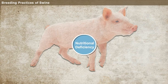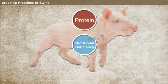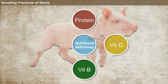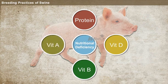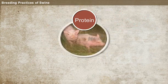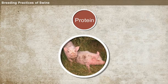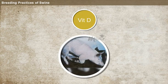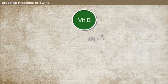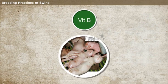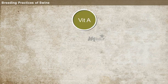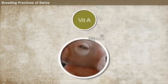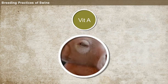Nutritional deficiency in pig. Some of the nutritional deficiencies in pig rearing are protein deficiency, Vitamin D deficiency, Vitamin B deficiency, and Vitamin A deficiency. Protein deficiency leads to abnormal skin and hair. Vitamin D deficiency leads to paralysis. Vitamin B deficiency leads to birth-related deaths and weak piglets. Vitamin A deficiency leads to blindness at the time of birth.